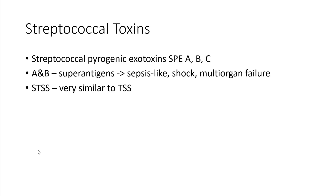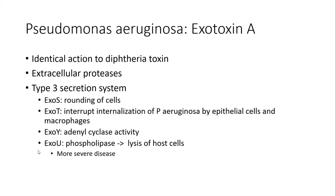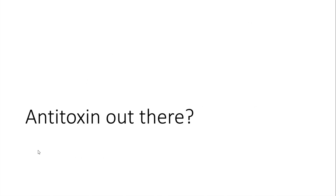Some streptococcal toxins are very similar to toxic shock syndrome toxins — they are exotoxins and superantigens leading to sepsis-like shock and multi-organ failure. Regarding Pseudomonas, we don't talk about its toxin as much, but its exotoxin has very similar, in fact identical, action to the diphtheria toxin — leading to direct cell killing by irreversibly inhibiting protein synthesis in the host cell. Pseudomonas also produces extracellular proteases and has type 3 secretion systems with many different enzymatic activities.